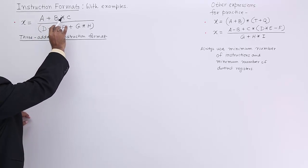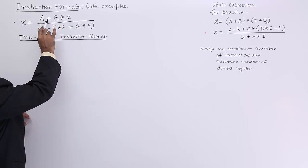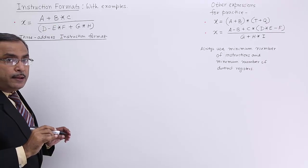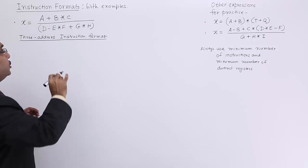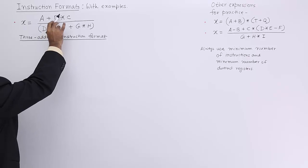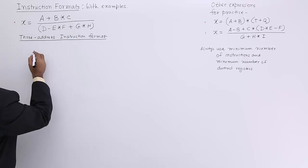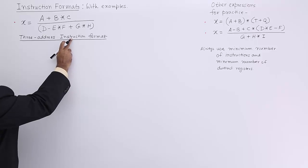At first in the numerator, we are having A plus B into C. I cannot perform A plus B until and unless I perform B into C. So I am writing this one in 3-address instruction format.